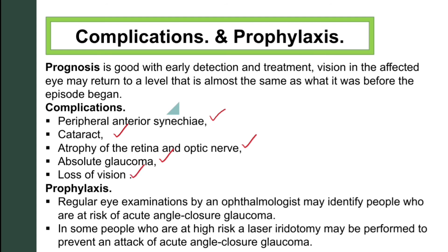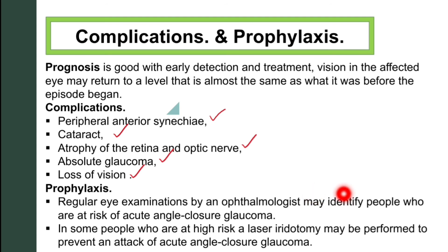For prophylaxis, regular eye examination by an ophthalmologist may identify people who are at risk of acute angle closure glaucoma. In some people who are at high risk, a laser iridotomy may be performed to prevent an acute angle closure attack.